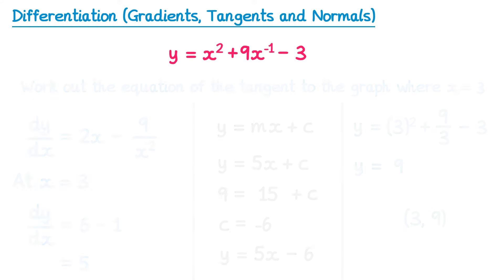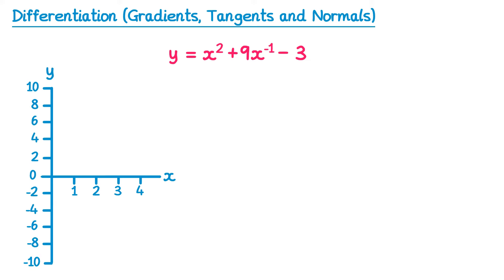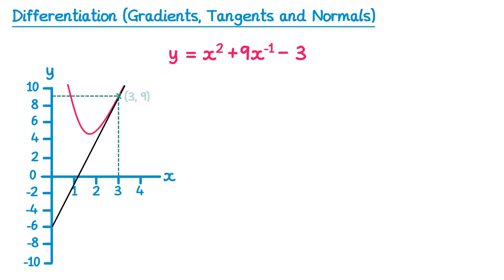It's useful to look at a graphical interpretation. At the point where x equals 3, we found the gradient of the tangent using the gradient function, then substituted x equals 3 back into the equation to find the y coordinate of 9. Putting it all together gives the equation y equals 5x minus 6.